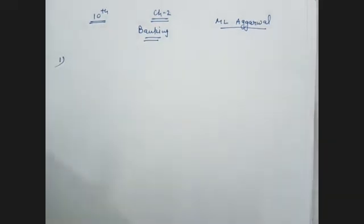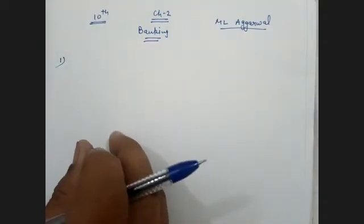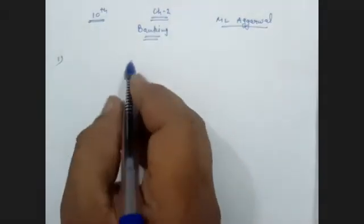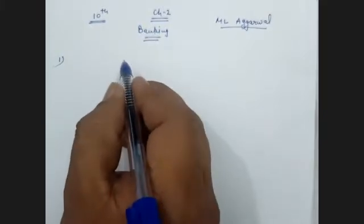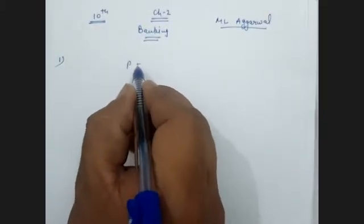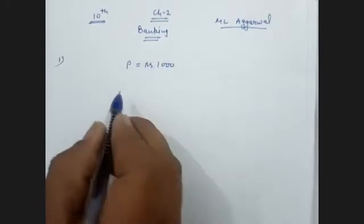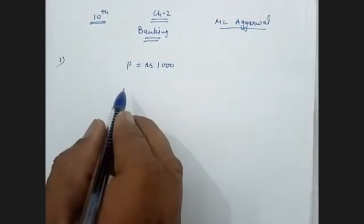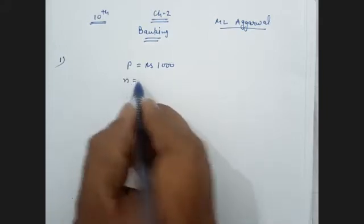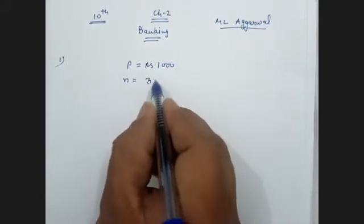Mrs. Goswami deposits ₹1000 per month. Principal is ₹1000. She has a recurring deposit account for 3 years. N = 3 into 12 = 36 months. Rate of interest is 8% per annum. Find the maturity value. Maturity value and matured value are the same thing.